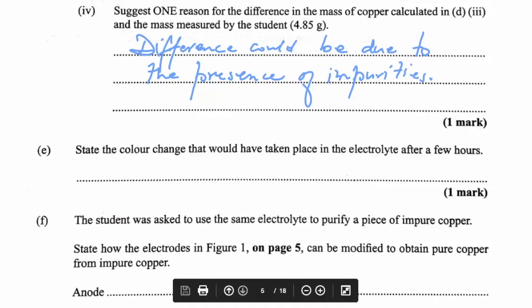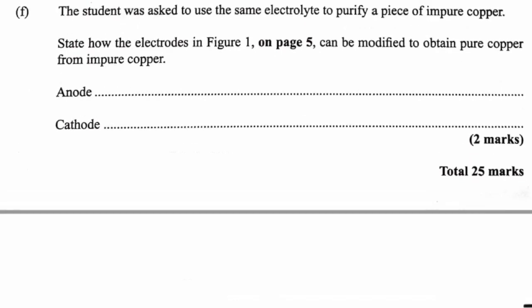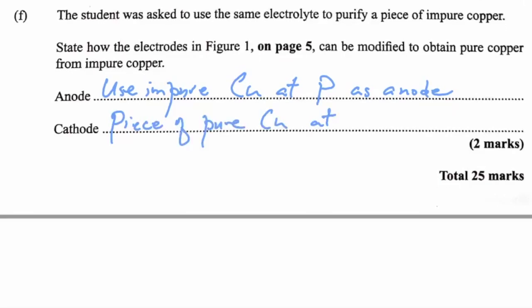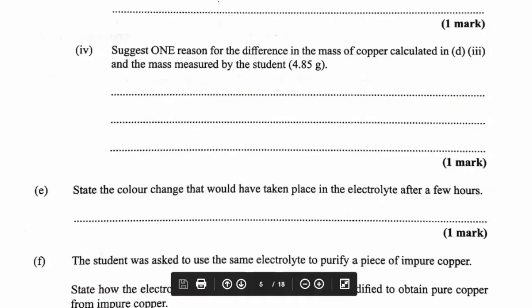The color change that would have taken place in the electrolyte after a few hours — we'd expect it to change from blue to colorless. To purify impure copper using the same setup, we would use impure copper at P as the anode, and a piece of pure copper at Q — that's where we want the pure copper to collect.